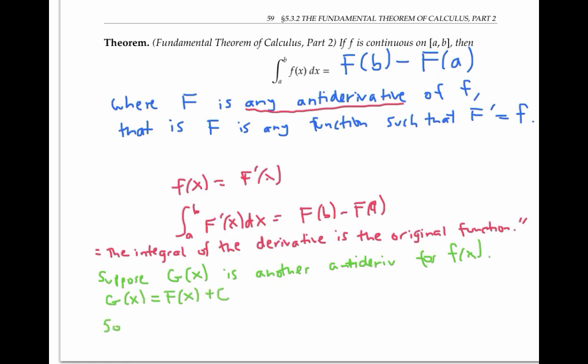So if we take G(b) minus G(a), that's going to be the same thing as F(b) plus c minus F(a) plus c. And since this constant c subtracts out to cancel here, this is just F(b) minus F(a).